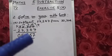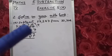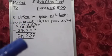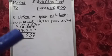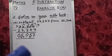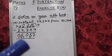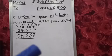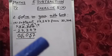14 minus 7 is 7. 9 minus 4 is 5. 2 minus 2 is 0. And your answer is 5,057.